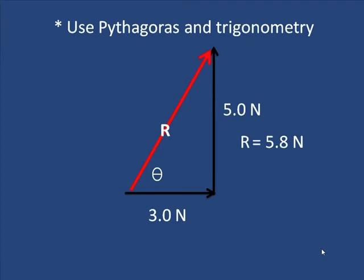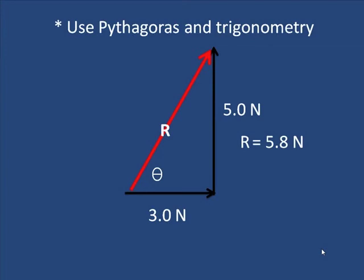5.8 newtons. It should be the same as the line that you drew and measured. And then we need to take the angle opposite over adjacent. We take 5 over 3. And that's what tan theta is. Then we take the inverse of the tan, or the tan minus 1, and we end up with theta is 59 degrees.